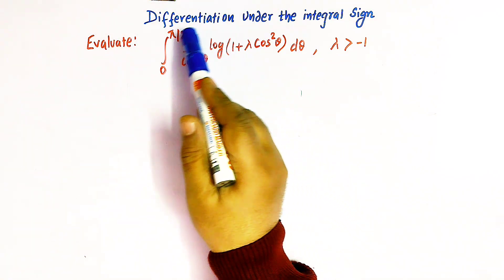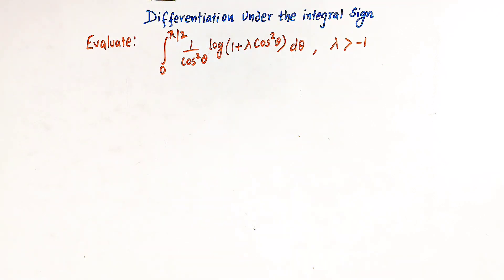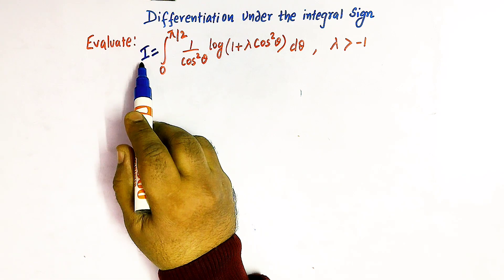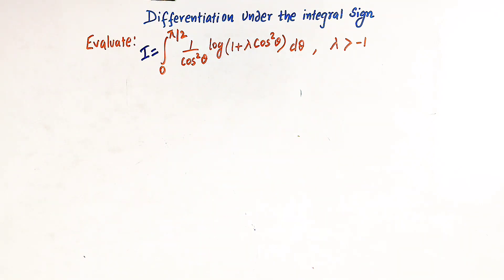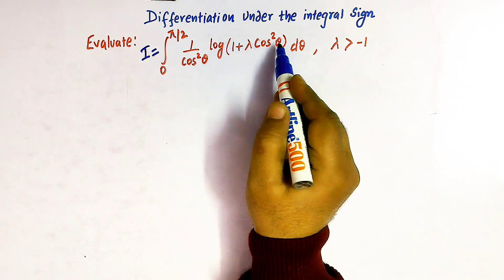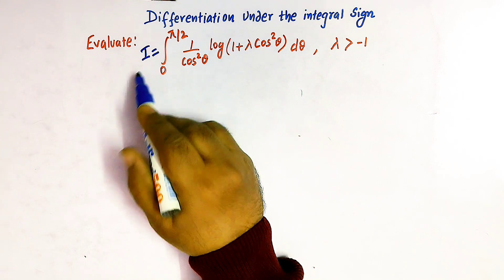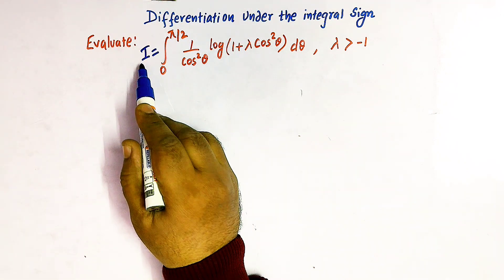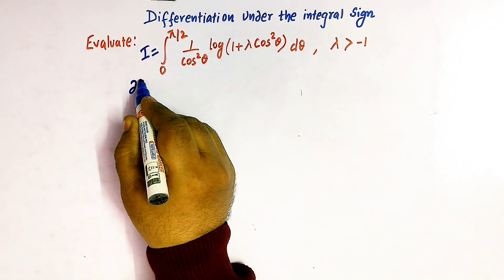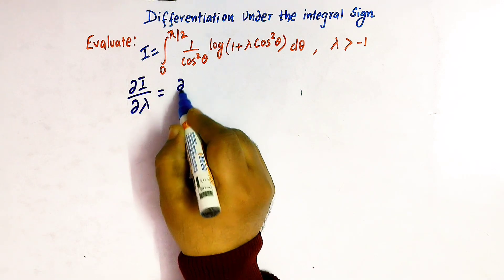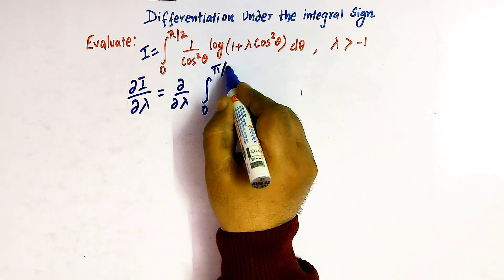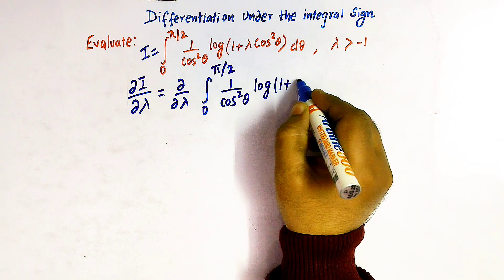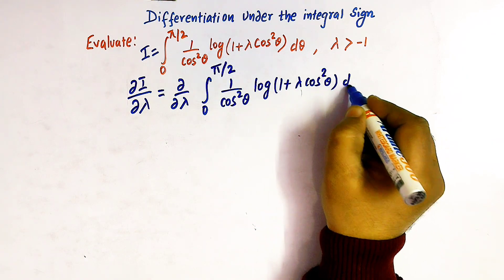We'll differentiate this integral with respect to the parameter λ. Let us first take this integral as i, and we will find the derivative of i with respect to λ. Since here we have two parameters λ and θ, we'll differentiate this integral i with respect to λ only, so we'll take the partial derivative of i with respect to λ.